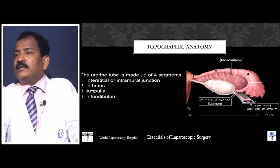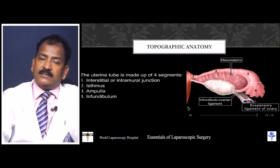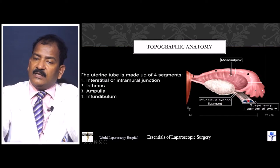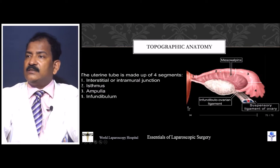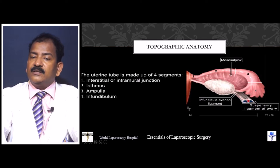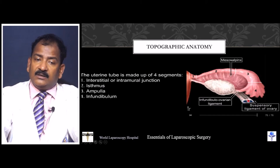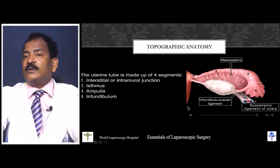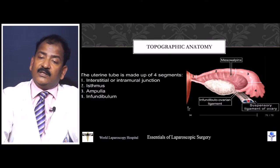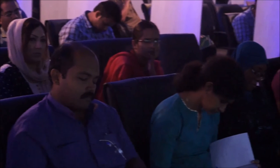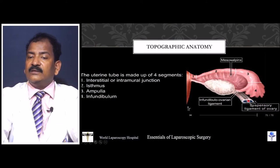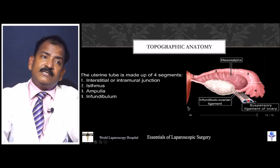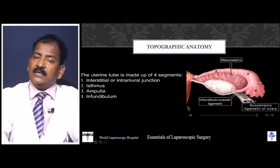The tube has four parts: the isthmic part, the interstitial part, the ampullary part, and the infundibular part. The isthmic part is mostly used for tubal sterilization and is also good for re-canalization. The interstitial is also called intramural. The ampullary part is most important for ectopic pregnancy, as the maximum number of ectopics occur there. The infundibular is also called the fimbrial part. It has three ligaments: the proper ovarian ligament, the infundibuloovarian ligament, and the infundibulopelvic ligament, and two mesenteries nearby — the mesovarium and the mesosalpinx.